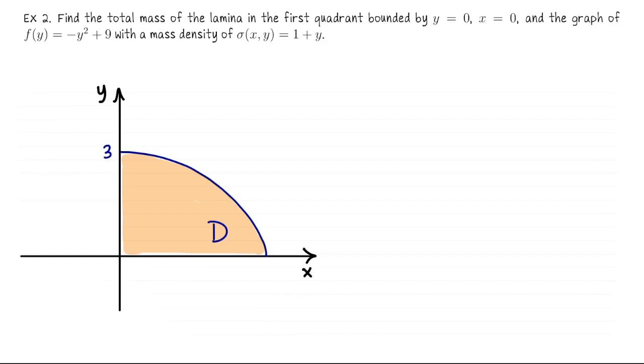Since x is given as a function of y, let's treat this like a type 2 region where the constant bounds for y will go on the outside. So m is the integral from 0 to 3, that's the minimum y to the maximum y, the integral from 0 to 9 minus y squared. For a choice of y value, we enter the region on the y-axis where x equals 0, and we exit the region on the parabola x equals 9 minus y squared. We integrate our density function 1 plus y and the differential should be ordered dx dy.